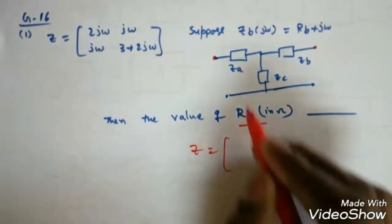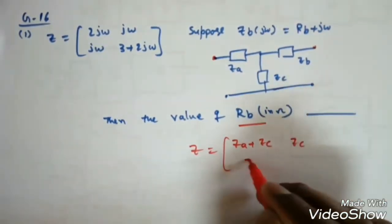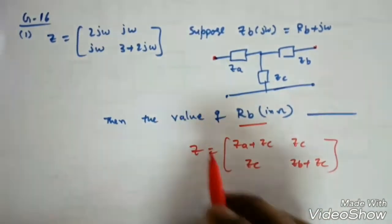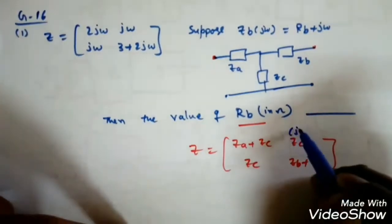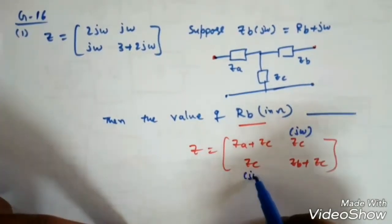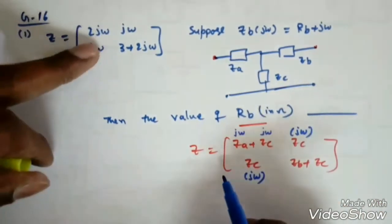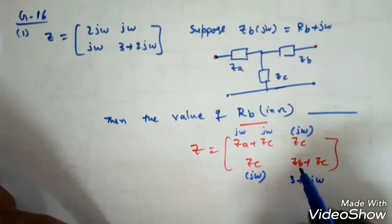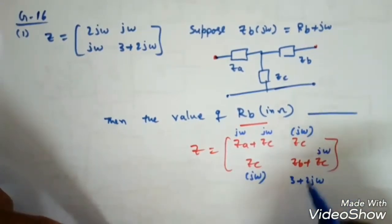So Z11 = Zda + Zc, Z12 = Z21 = Zc, and Z22 = Zb + Zc. Comparing: Zda + Zc = 2jω, so Zc = jω (fixed), which means Zda = jω. Similarly, Z22 = 3 + 2jω; since Zc = jω, we need Zb + jω = 3 + 2jω, so Zb = 3 + jω.